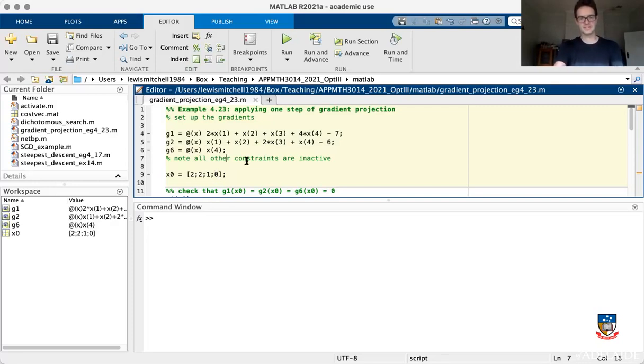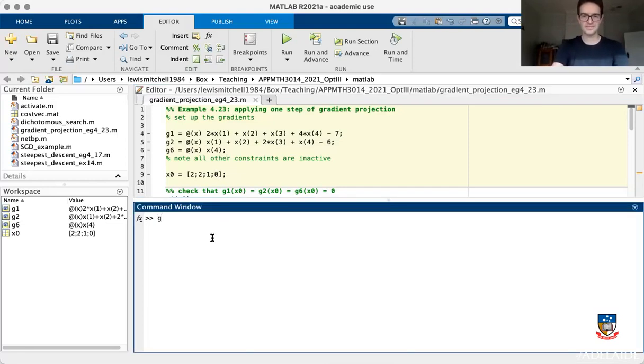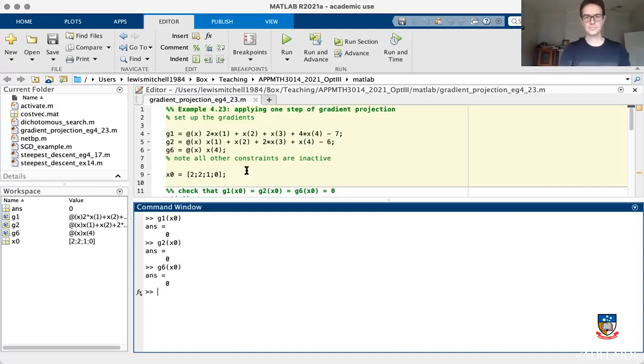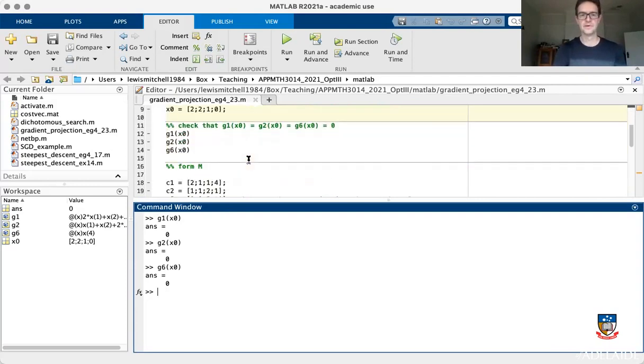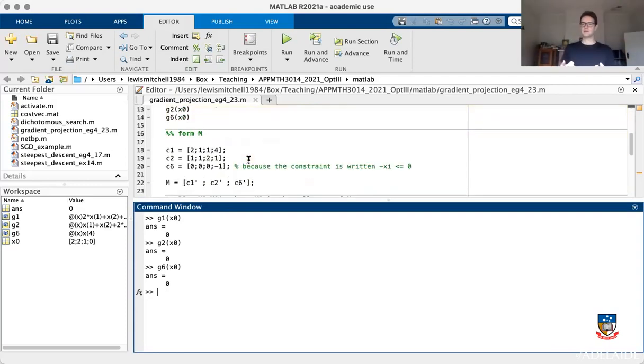So let's actually just execute that cell. We'll write all this stuff into memory. And then we can check that in fact, G1 of X0 is equal to zero, G2 of X0 is equal to zero and G6 of X0. I don't really need to check that one, but I will. I get zero each time. So I can check that those constraints are satisfied. You can go through and check that the other three constraints are not satisfied. So once we have that, we know that our index set, our active constraints are constraint 1, 2 and 6.